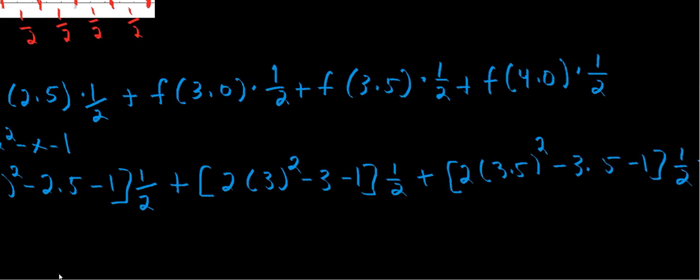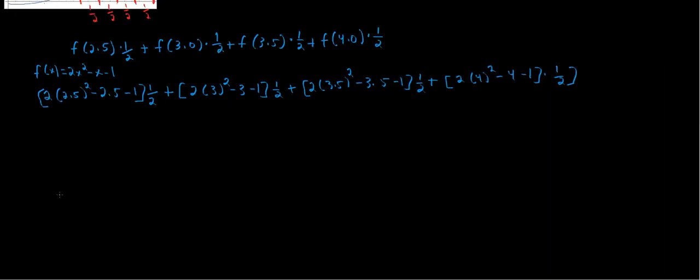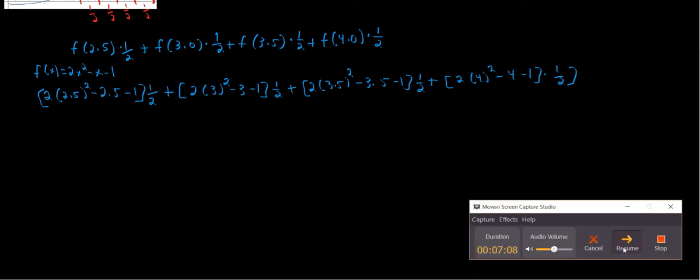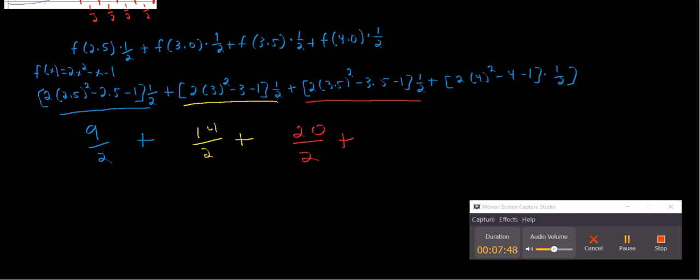And I'm just going to use my calculator for this. So I figured them all out. Well, we have 9 halves for this first term. All this, 9 halves. All this is 14 halves. 14 halves plus all this equals 20 halves, plus all this equals 27 halves.